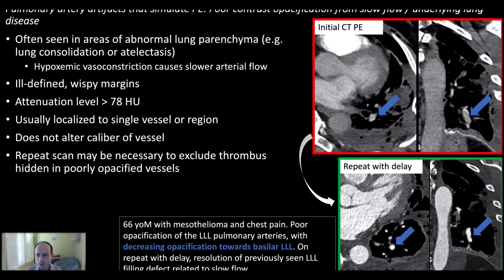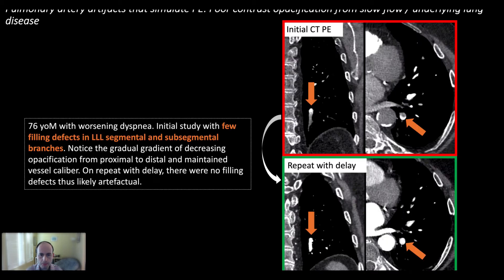Other clues: thrombus tends to be low in attenuation, around 40–50 Hounsfield units. If you measure the filling defect and it's much higher than that, it's almost certainly not thrombus. These defects tend to be ill-defined and wispy, and will not alter the caliber of the vessel. If you have any question, it's very easy to just repeat with more delay.